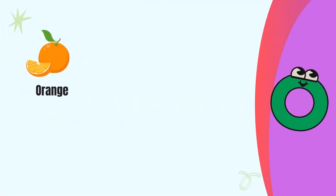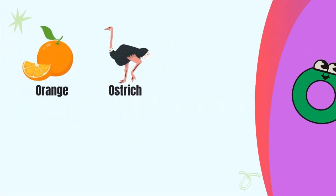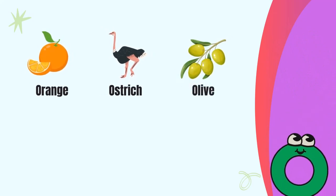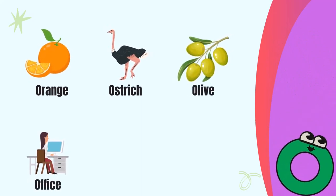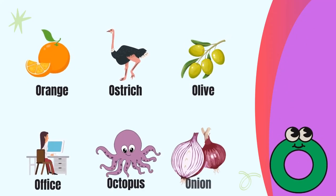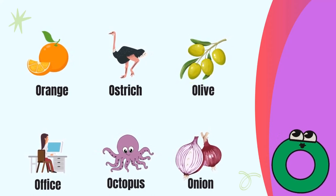Letter O. O for orange, O for ostrich, O for olive, O for office, O for octopus, O for onion.